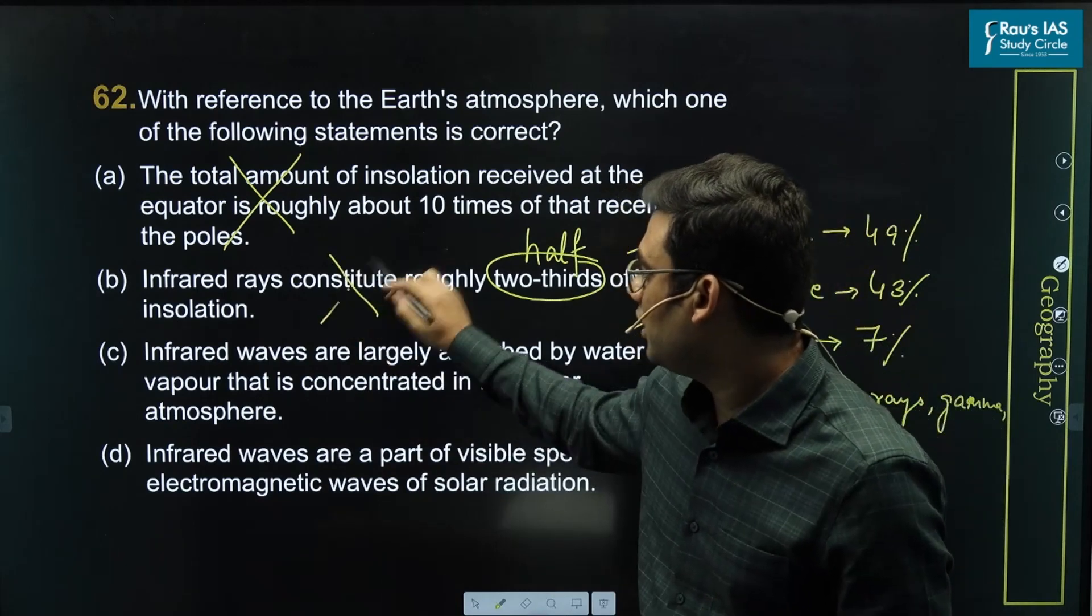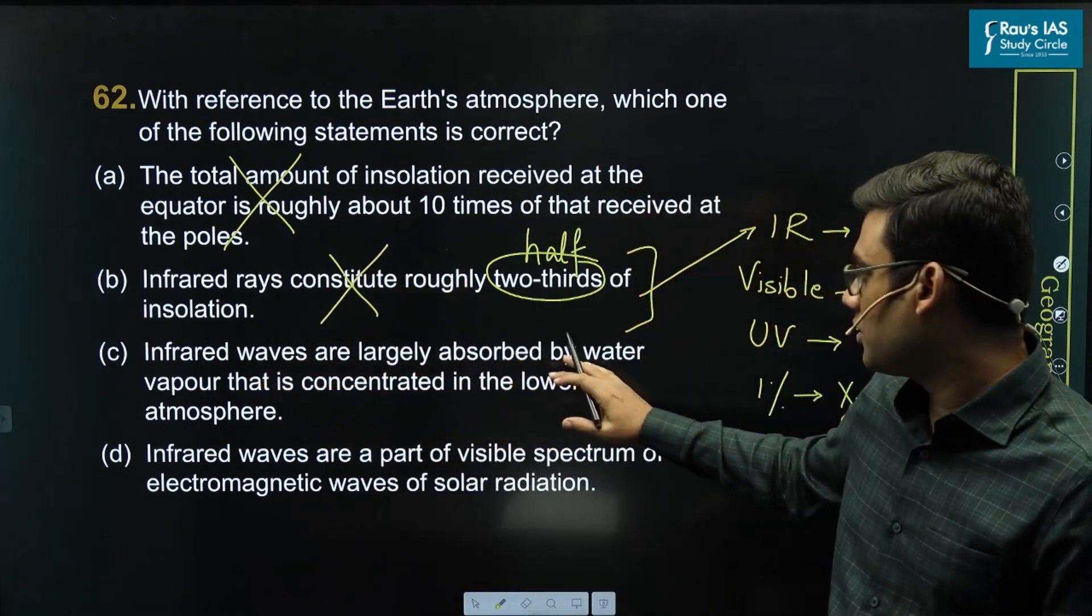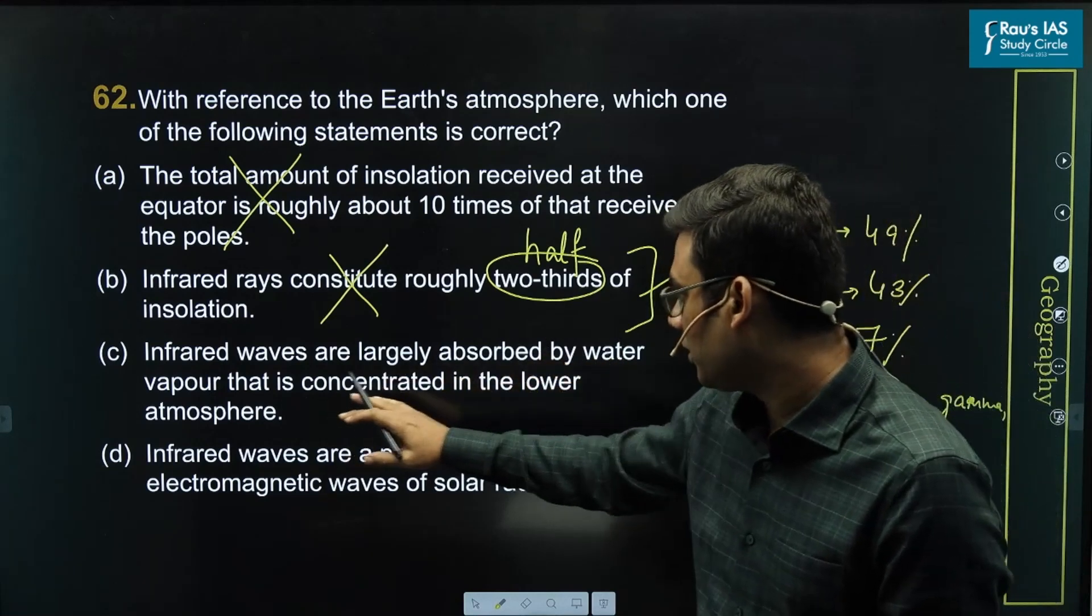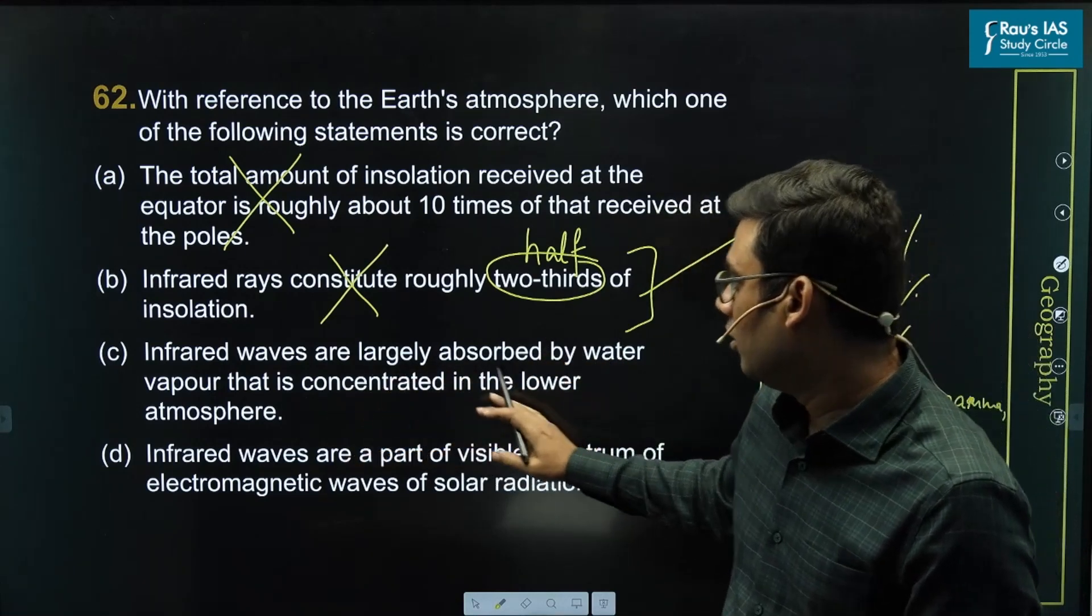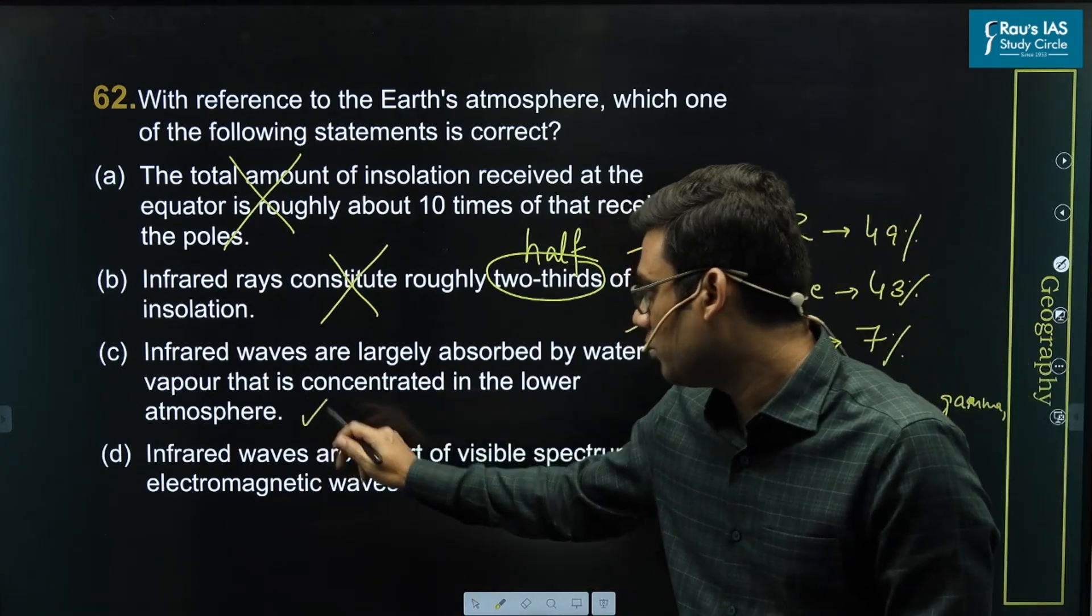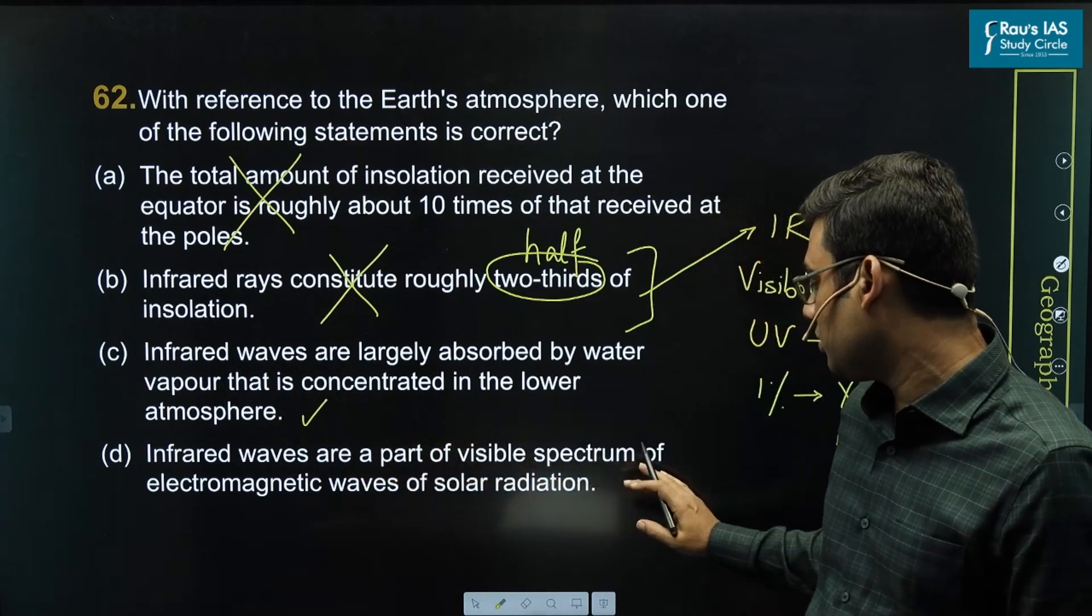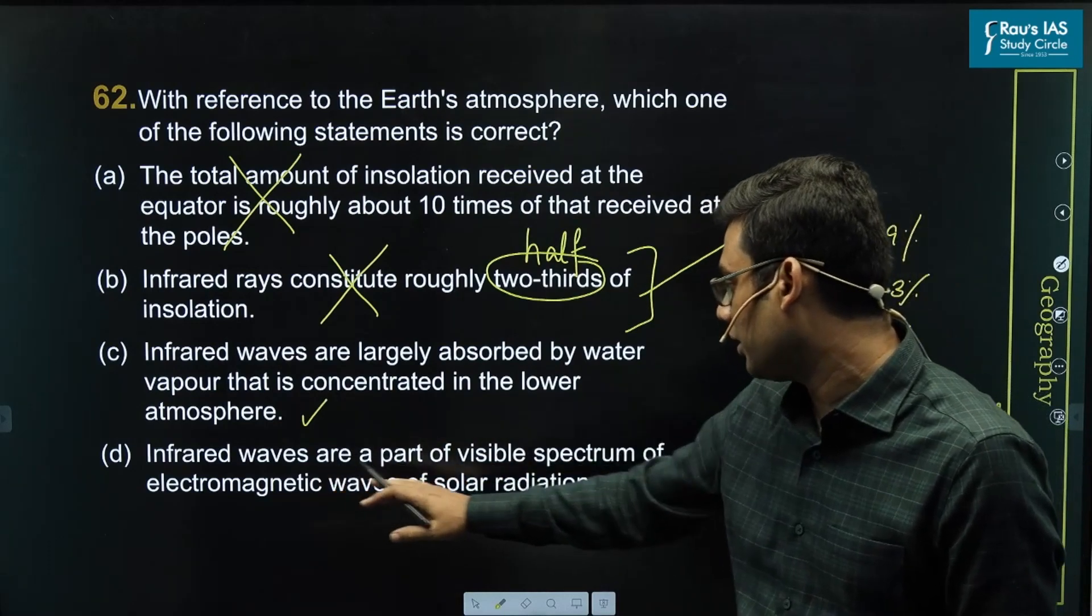Infrared waves are largely absorbed by water vapor that is concentrated in the lower atmosphere. This statement seems to be correct, but let's check the fourth statement: infrared waves are part of visible spectrum of electromagnetic waves. This is absolutely incorrect.